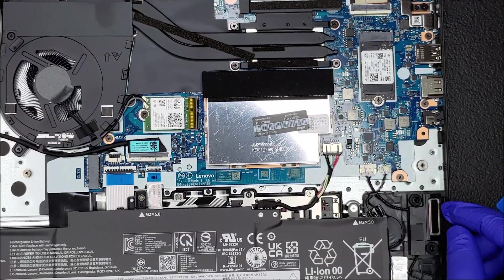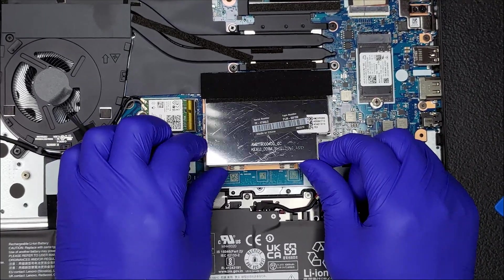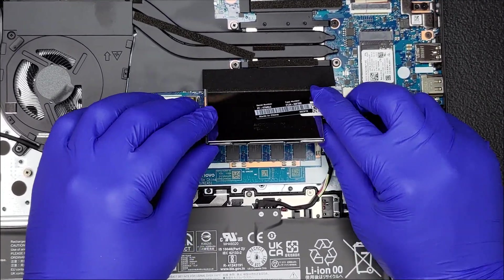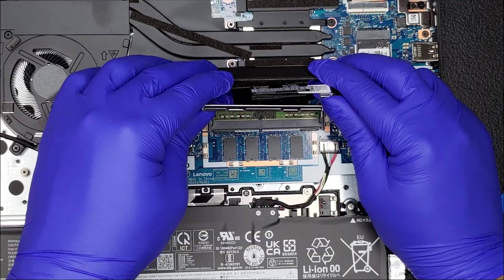The soldered RAM and removable RAM are both under a metal cover that is held in place by a few clips. Once the cover is removed, the RAM chip itself is easily removed as well.